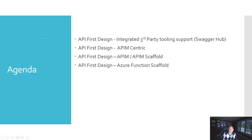So what's the agenda for today? We're going to start by looking at an integration where a third-party tool is integrated directly into Azure API management and discuss API-first design. Then we'll look at an API-management-centric approach. After that, we'll shift to the scaffolding part — how you can generate code and unit tests, what you can do in Visual Studio Code, and what options there are for both Azure Functions and Azure API management to automatically generate code.